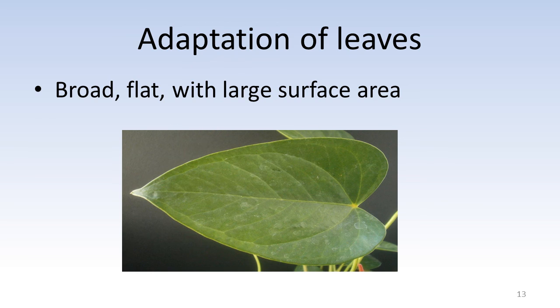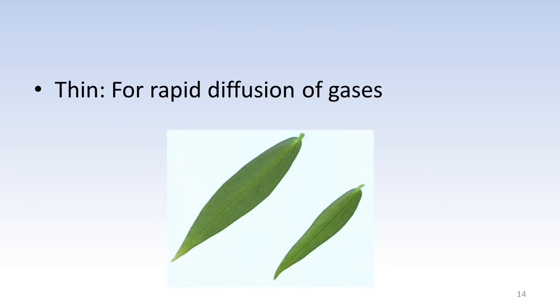Leaves are also usually very thin. There are two advantages to this. One, it allows for a rapid diffusion of gases and two, it allows sunlight to penetrate all of the cells.